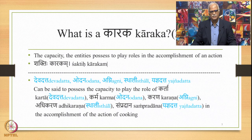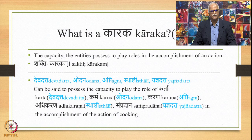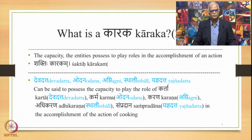Taking the same entities — Devadatta, Odana, Agni, Sthali and Yadnyadatta — we can say that these entities possess the capacity to play the role of Kartha: Devadatta plays that role; Karma: Odana plays that role; Karana: Agni plays the role; Adhikarana: Sthali plays this role; and Sampradana: Yadnyadatta plays this role, in the accomplishment of the action of cooking. So this Shakti that exists in Devadatta, Odana, Agni, Sthali and Yadnyadatta to play these roles respectively — this Shakti is called Karaka. This is the improved definition presented in the tradition: Shakti Hikarakam.